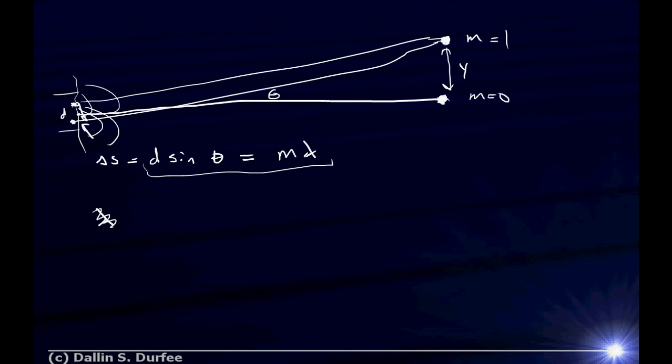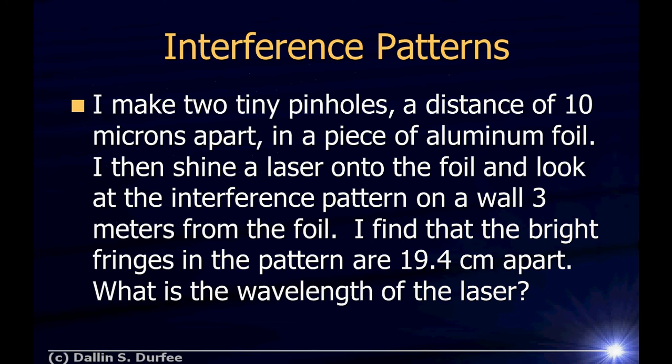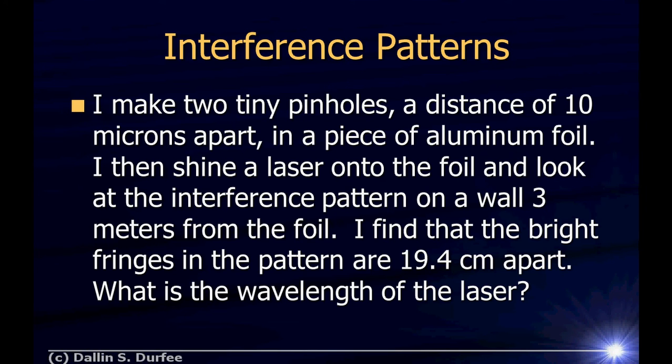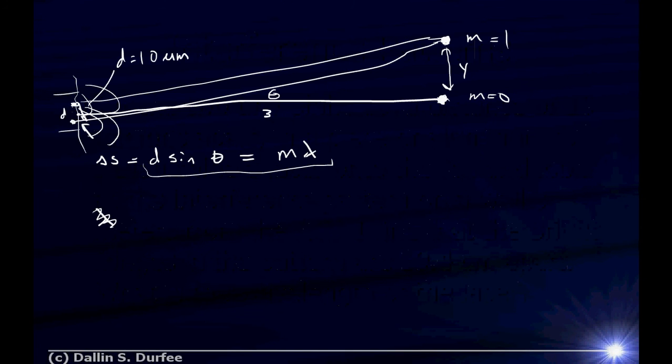So the distance between the two is 10. So this is 10 microns here. So D is equal to 10 microns, also known as micrometers, a millionth of a meter, alright? The wall is 3 meters away and then 19.4 centimeters. So this is 3 meters here, the distance to the wall. And y is equal to 19.4 centimeters, alright? That's how far apart my fringes are.